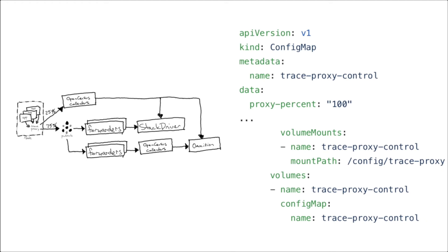We then needed to shift traffic to the new pipeline. We set up two export pipelines in the collectors — one to Stackdriver and one to Omnition. We added a reverse proxy to the trace proxy that simply forwarded requests to the upstream collectors, and we added a mechanism in the trace proxy that let us dynamically control the traffic split by adjusting the config map mounted as a file. After shifting the traffic, we ran in this shape for a long time, with the proxy percentage set to 100, and slowly removed our safety nets, deleting all the custom forwarders and removing the old Pub/Sub topic and subscribers.